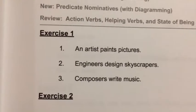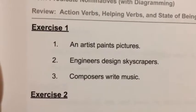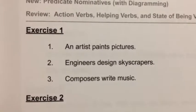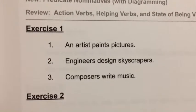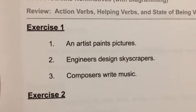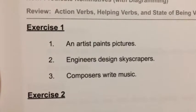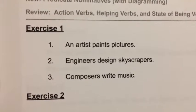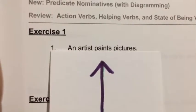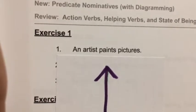I want you to look at exercise one. In this exercise, look for the action verbs. Put a circle around the action verbs in exercise one. Pause it if you need to. We're going to check it. The first one is paints — an artist paints pictures. Paints is your action verb.